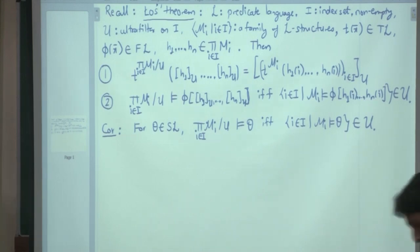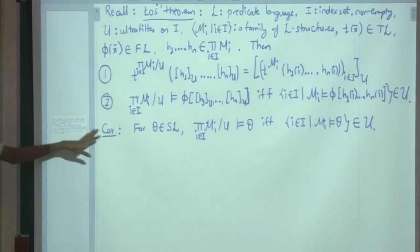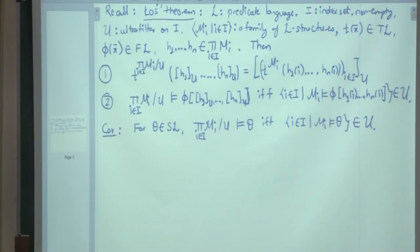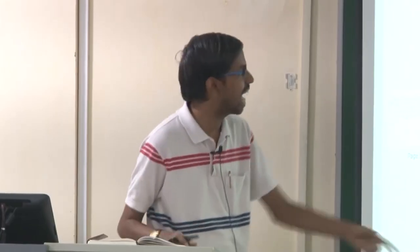Very loosely speaking — I also read a document yesterday which wrote Walsh's theorem informally as saying that a sentence is true in the ultra product if and only if it is true on average. Almost half of the structures: if that sentence is true in half of the indices, then you have this. Because when talking about natural numbers, either odds or evens but not both will belong to the ultra filter. So whatever is the behavior of half of these structures, that average behavior is the behavior of the ultra product structure.